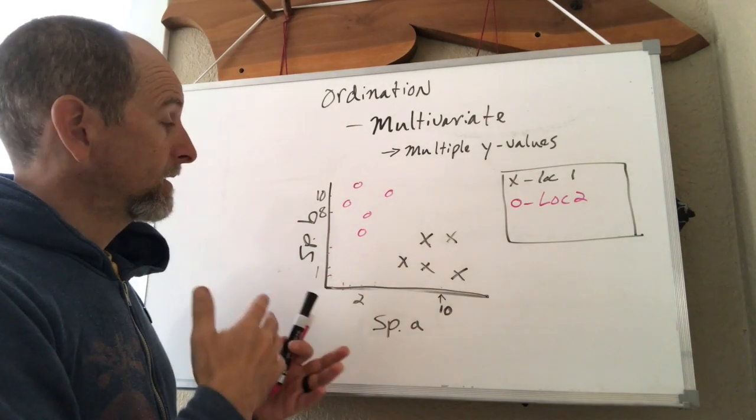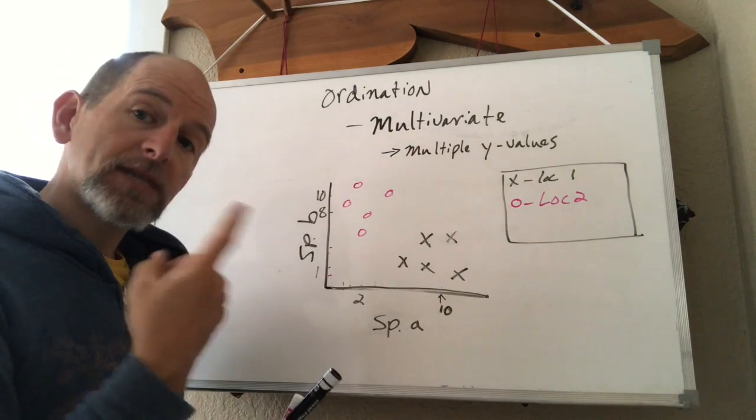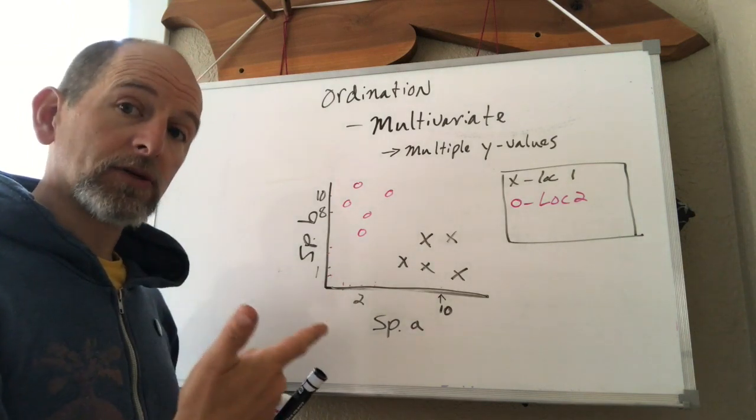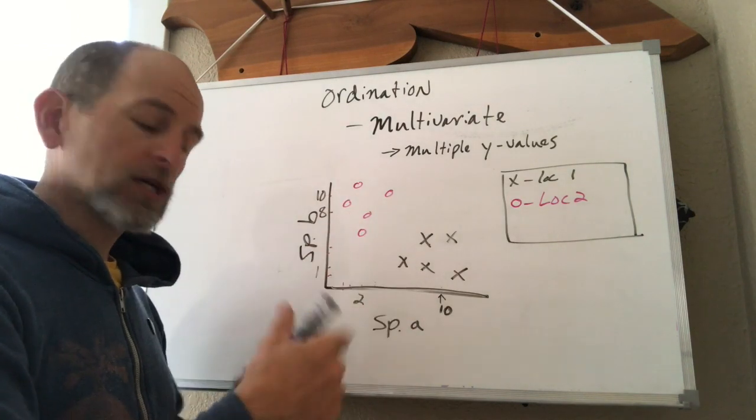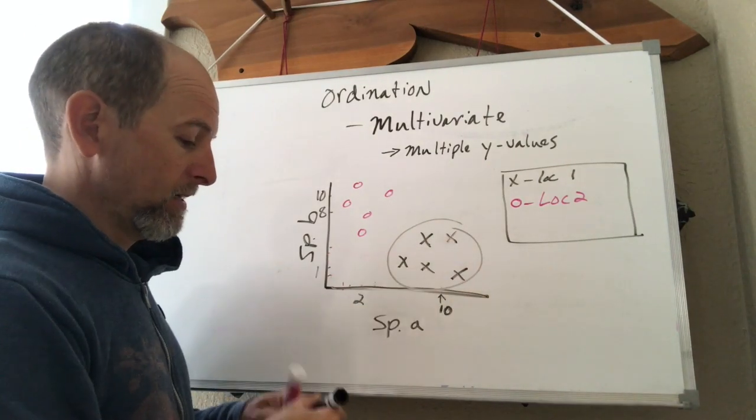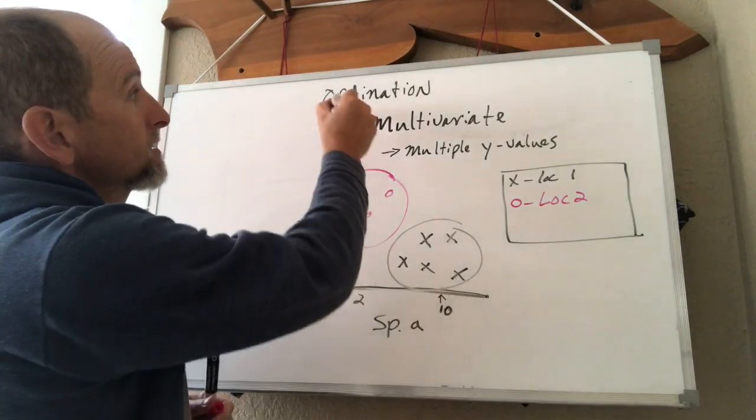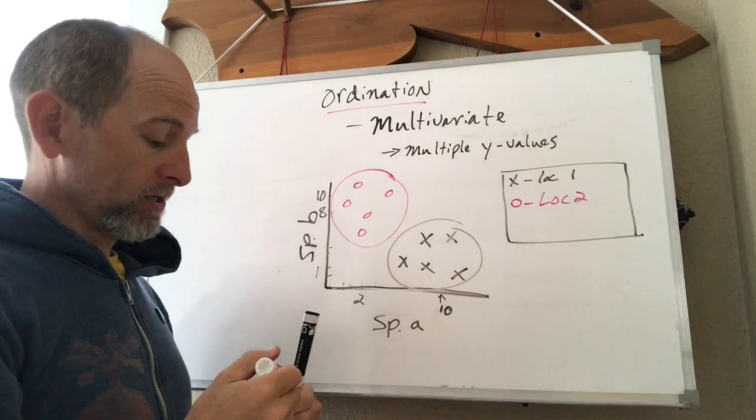And they have a similar spread among their data. They have the same richness, same number of species, probably similar evenness. But clearly the communities are different. So here's one community here. And then we have one community here. This is where ordination approaches come in.